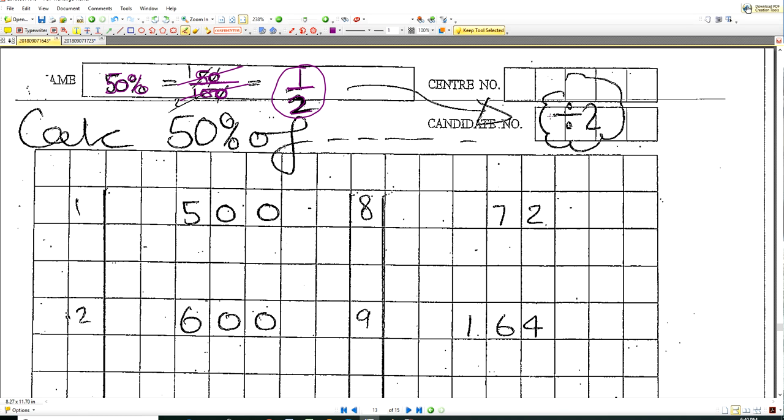Now, how do we work out half of something? We work out half of something by dividing by 2. How do we divide by 2? We divide by 2 by using the bus stop method.